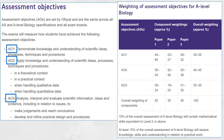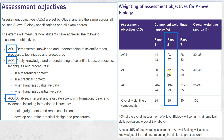Here are your assessment objectives and the proportion you can expect on each paper. The most noticeable thing for paper 2 is that 52 to 56% is AO2, which is application questions — so over half the questions will be application. For paper 3, the big difference is the AO3, which covers practical techniques and scientific information style questions.